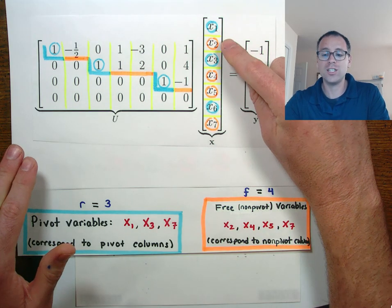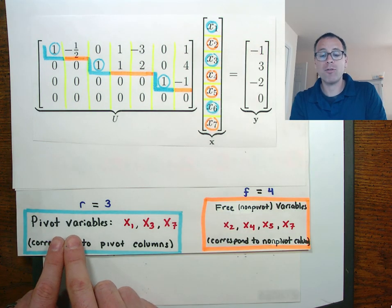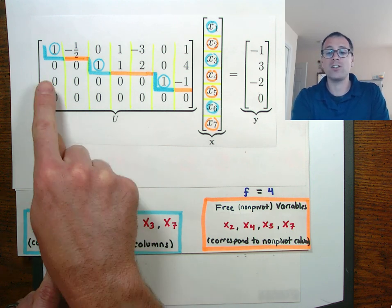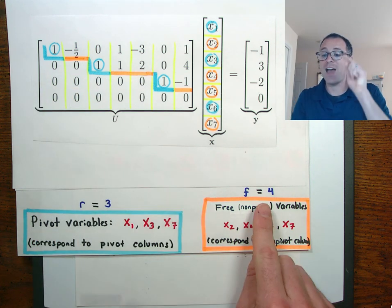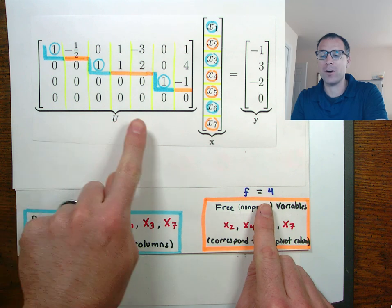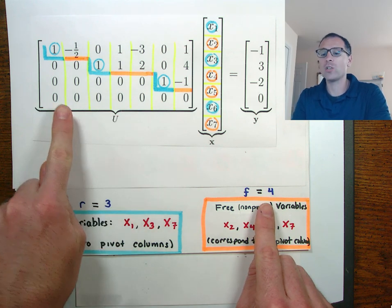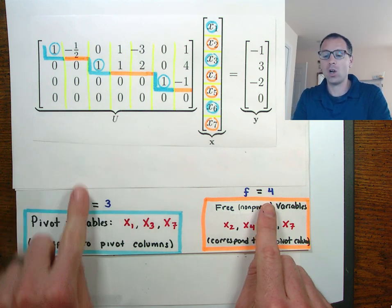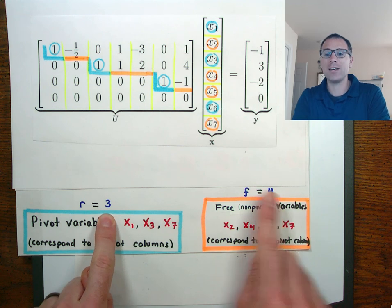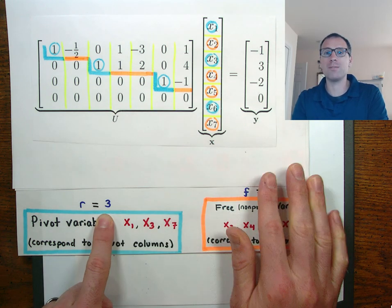Which means that when we look at our original system, we have r equals three pivot variables corresponding to the three pivot columns. And we have f equals four non-pivot variables, free variables, corresponding to the four non-pivot columns. Three plus four is seven - there are indeed seven columns of this matrix.